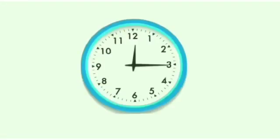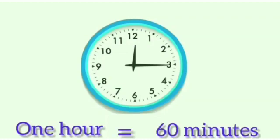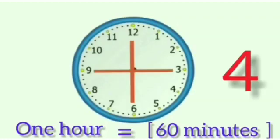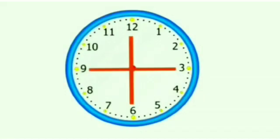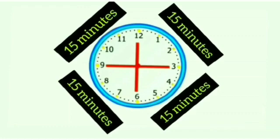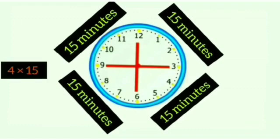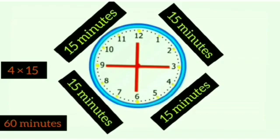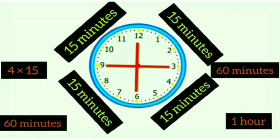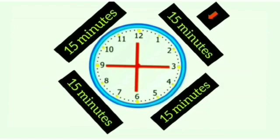Dear students, till now you have learned that there are 60 minutes in one hour. If we divide 60 minutes into four equal parts, then tell me how many minutes will be there in each part? On dividing 60 minutes into four equal parts, there will be 15 minutes in each part. Four multiplied by 15 minutes is equal to 60 minutes, which means 60 minutes is equal to one hour.